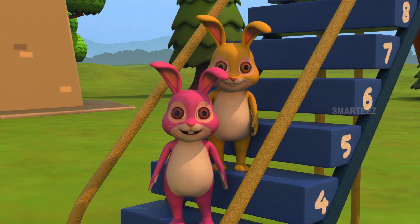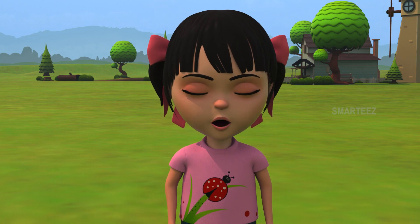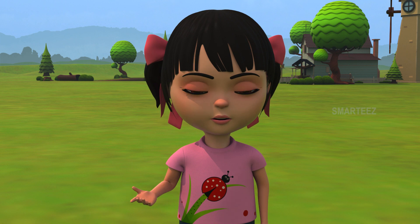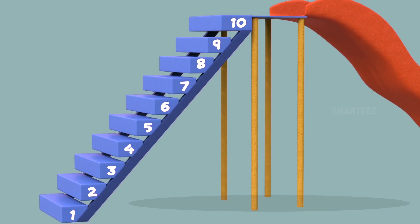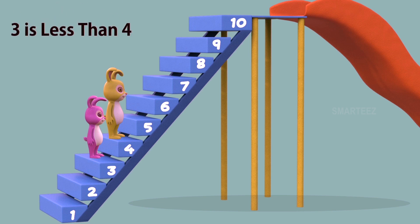Yay, I'm the winner this time! The number the pink bunny is on is less than the yellow bunny's. Let me explain. When the music stopped, the yellow bunny was on step number 4 and the pink bunny was on step number 3. We see step number 3 is lower than step number 4. We call this as 3 is less than 4. So, when a number is lower than some other number, we call it less than the other number.